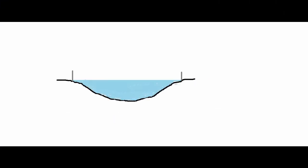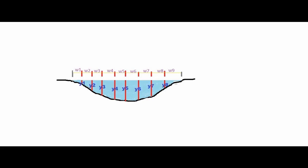Choose a suitable section of a river. Let this section be the cross section. Divide the width into a number of vertical subsections. Then measure the average width of each subsection. Then measure the depth at each section as y1, y2, y3.